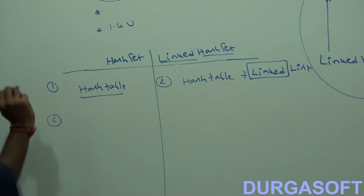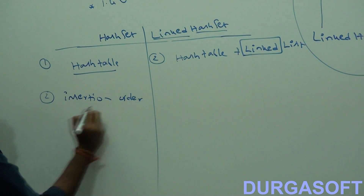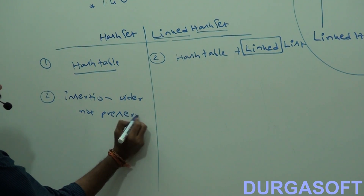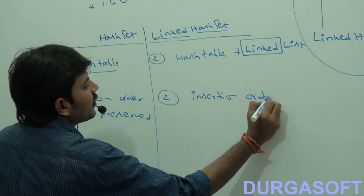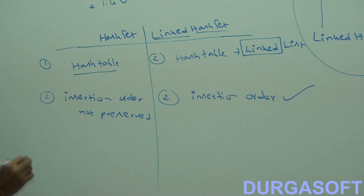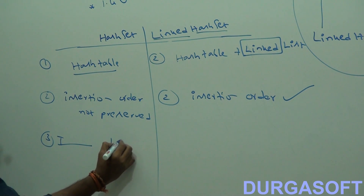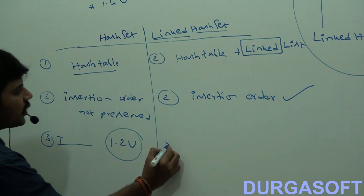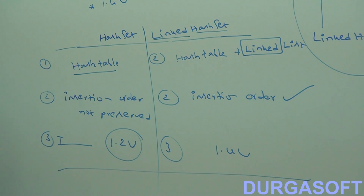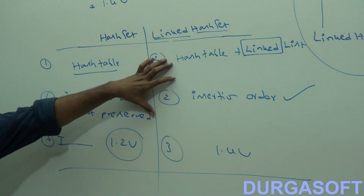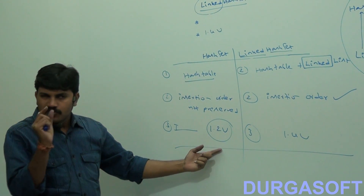Now, insertion order: for HashSet, insertion order is not preserved. But for LinkedHashSet, insertion order is preserved. Third point: HashSet was introduced in version 1.2, but LinkedHashSet was introduced in version 1.4. Every other property is exactly the same — LinkedHashSet is just a small variation of HashSet.